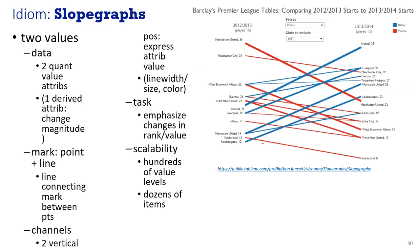For the slope graph idiom, we compare two values. Data includes two quantitative attributes and one derived attribute that might represent change in magnitude. Mark is a point and line connecting marks between points. Channels include two vertical positions expressing attribute values such as line width, size, or color. Task is to emphasize changes in rank for the values.